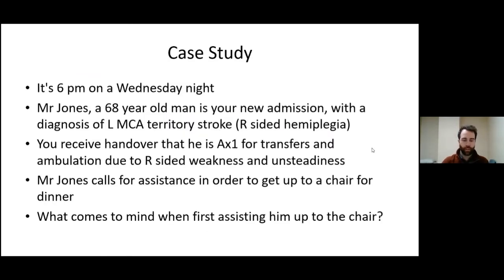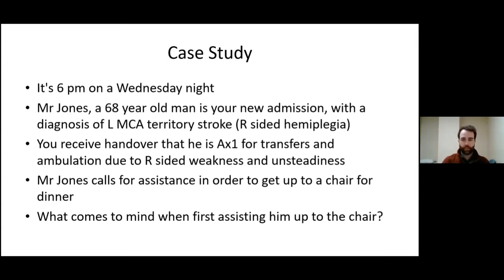We'll start off with a quick case study. It's 6 p.m. on a weekday. Mr. Jones, a 68-year-old gentleman, is your new admission. He has a diagnosis of a left MCA stroke, so he'll have some right-sided hemiplegia. You receive a handover that he's assist-one for transfers and ambulation due to right-sided weakness and unsteadiness. Mr. Jones calls for assistance to get up to a chair for dinner. What comes to mind when first assisting him? We'll get back to this at the end.